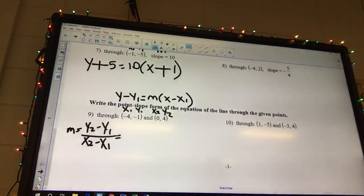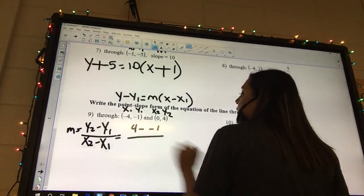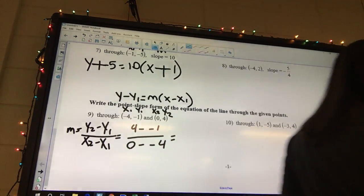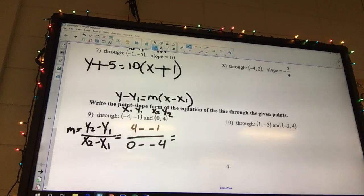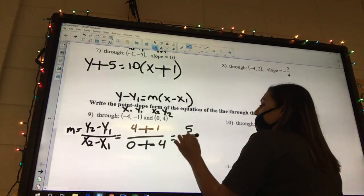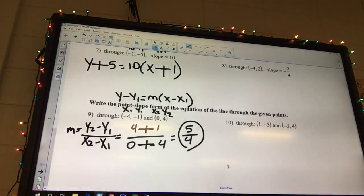So we got y2 minus y1 over x2 minus x1. Y2 is 4 minus negative 1, 0 minus negative 4. What's the minus minus? I mean plus. So we got plus, plus. So I'm going to have 5 over 4. What is 5 over 4? What were we finding? The slope. Yeah. It's the slope.